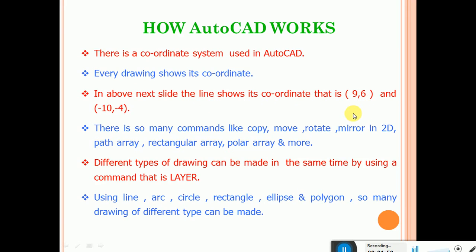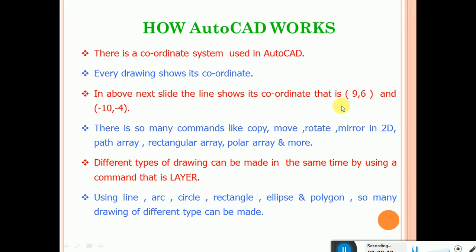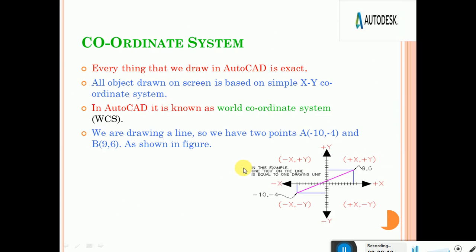In the next slide of the coordinate system — see here — this is the Cartesian coordinate system. Nine point six: nine is the X-axis and six is the Y-axis. We can take our space area of AutoCAD. The middle point is taken as zero comma zero, that means X-axis is zero and Y-axis is zero. This is the origin of the coordinate.